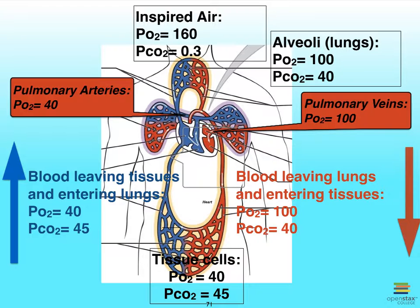Let's apply all these partial pressure numbers along with the solubility properties of the gases to this diagram. Notice that we have the heart here with its four chambers. The two vena cavae are bringing oxygen-poor blood back to the right atrium, from the right atrium into the right ventricle, and from the right ventricle the blood is pushed up through the pulmonary trunk into the pulmonary arteries — which are oxygen-poor. Gas exchange occurs in the lungs, which we refer to as external respiration, so that by the time blood leaves the lungs via the pulmonary veins, it returns to the left side of the heart, goes down into the left ventricle, and the left ventricle pushes the blood out via the aorta, carrying oxygen-rich blood to the rest of the body.